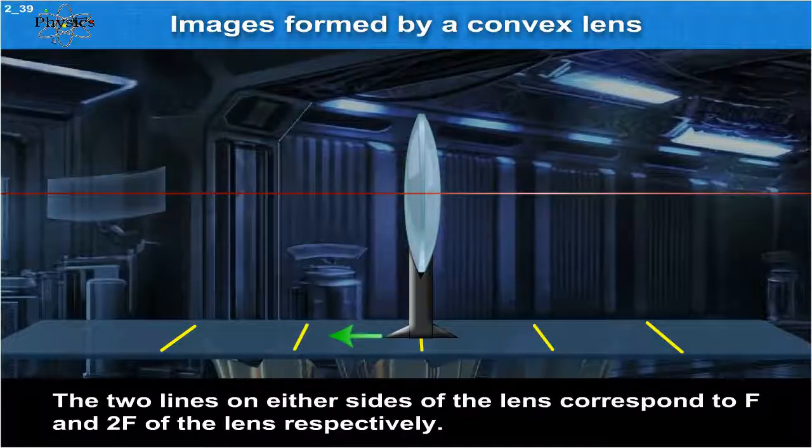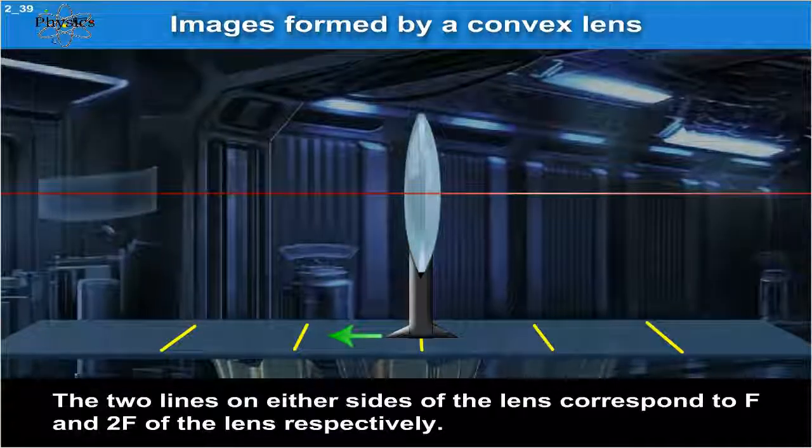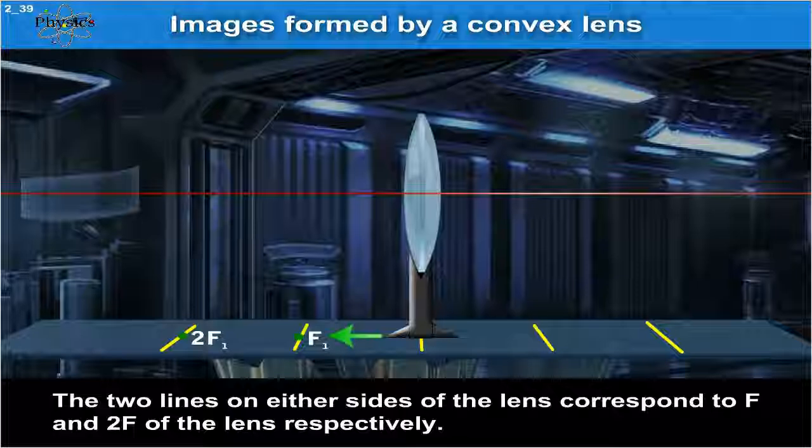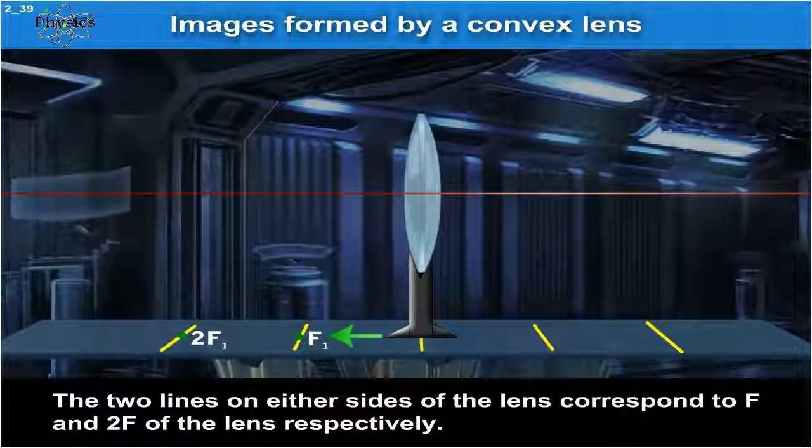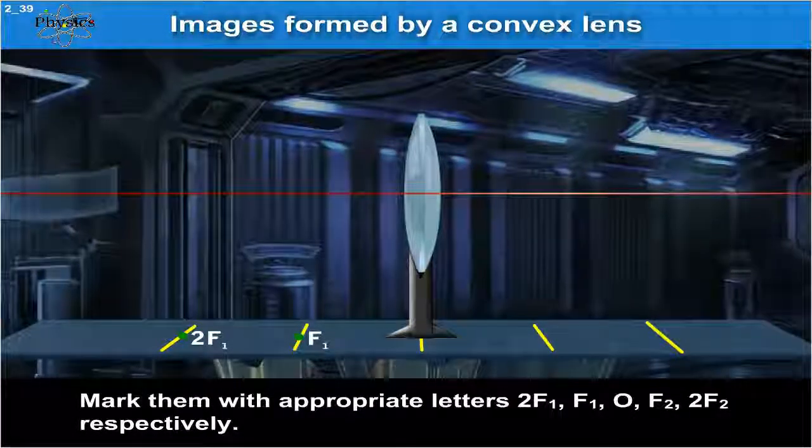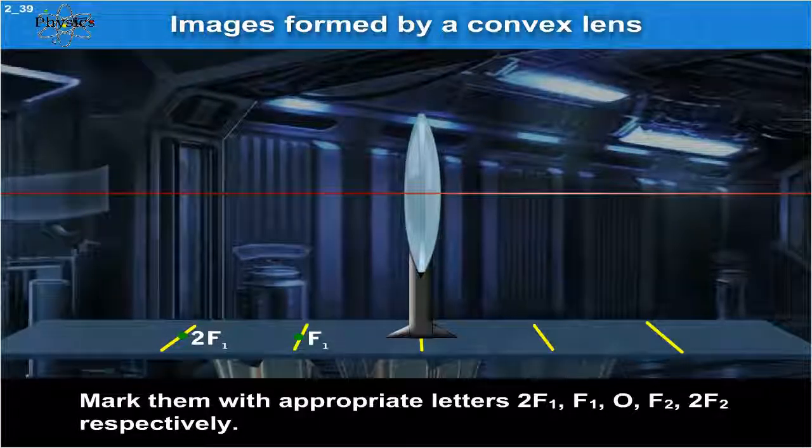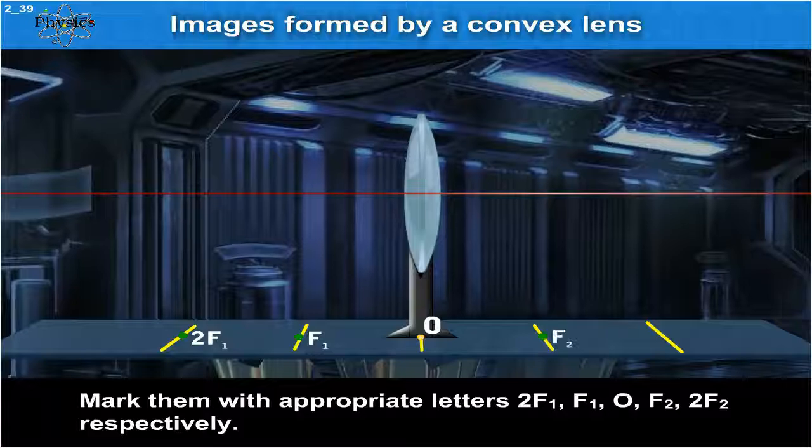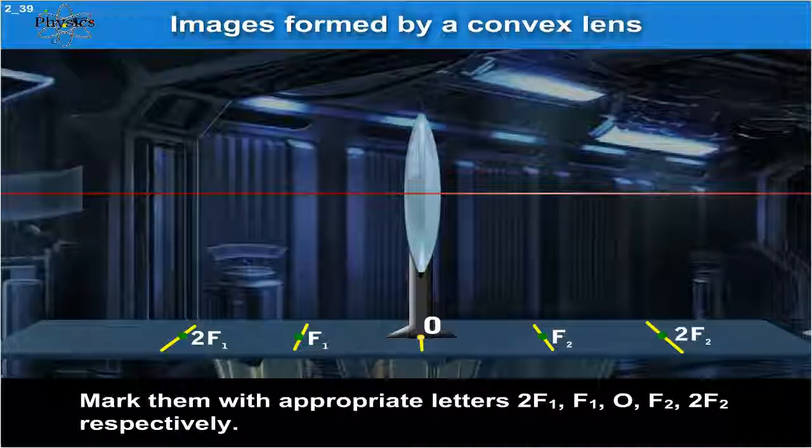The two lines on either sides of the lens correspond to F and 2F of the lens respectively. Mark them with appropriate letters 2F1, F1, O, F2, 2F2 respectively.